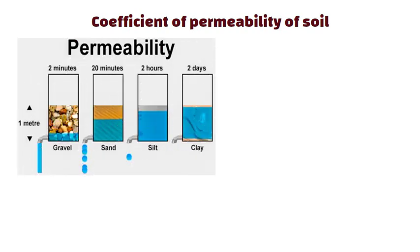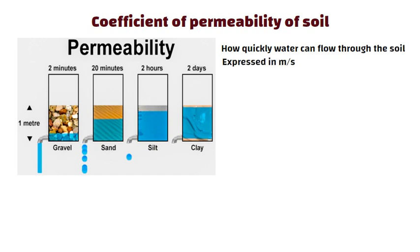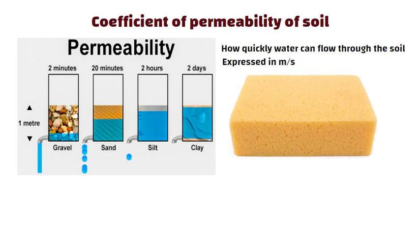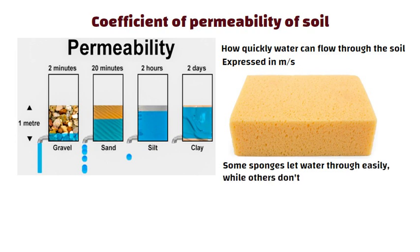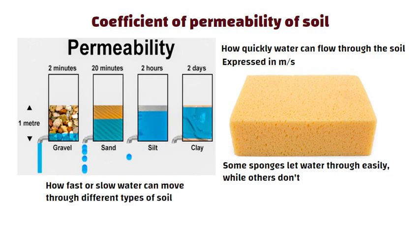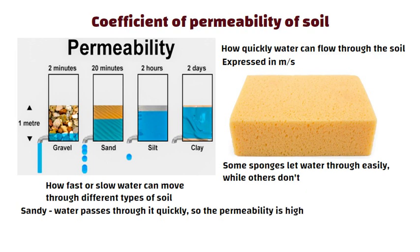Coefficient of permeability of soil. It is a number that helps us understand how quickly water can flow through the soil, expressed in meters per second. Think of soil like a sponge — some sponges let water through easily while others don't. The coefficient of permeability tells us how fast or slow water can move through different types of soil. If the soil is sandy, water passes through it quickly, so the permeability is high. If the soil is clayey, water moves very slowly, so the permeability is low.